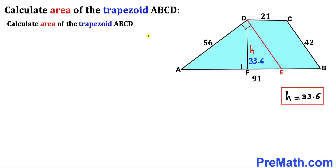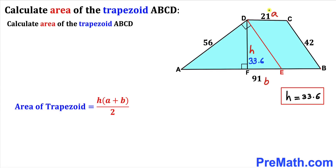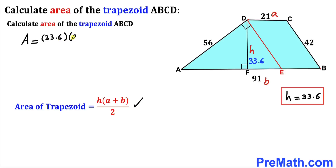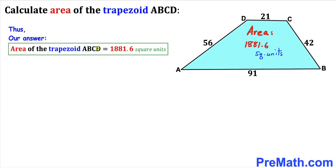Now for the final step, let's calculate the area of the blue shaded trapezoid ABCD. Recalling the area formula: Area equals H times (A plus B) divided by 2. In our case A equals 21, B equals 91, and H equals 33.6. So the area equals 33.6 times (21 plus 91) all over 2, which gives the area of the blue shaded trapezoid as 1881.6 square units.